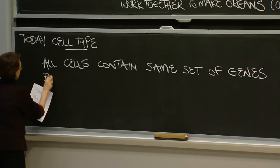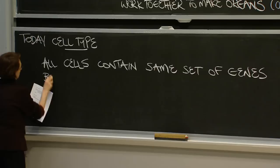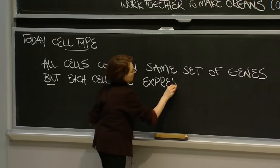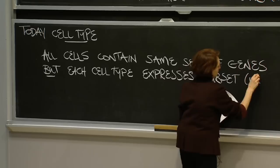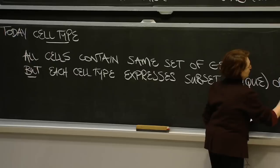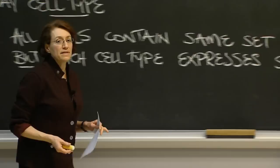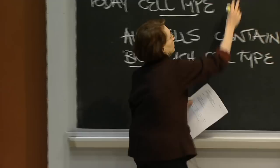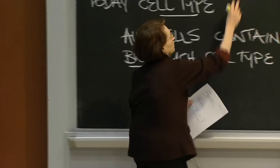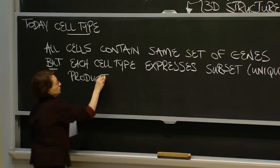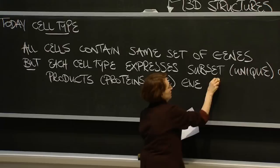Each cell type expresses a unique subset of the genome. This set of genes and the products of those genes make the cell type what it is. The products of those genes — usually proteins and some RNAs — give the cell type its function.